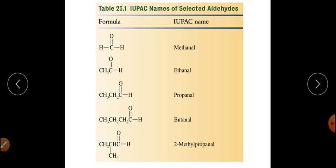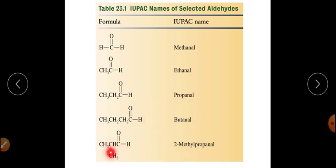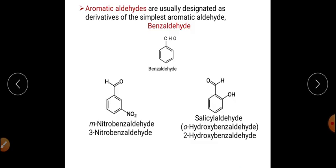More examples of aliphatic aldehyde IUPAC names: methanal, ethanal, propanal, butanal. For a branched structure with a methyl group at C2 of a three-carbon chain, it is 2-methylpropanal. This covers nomenclature for aliphatic aldehydes.